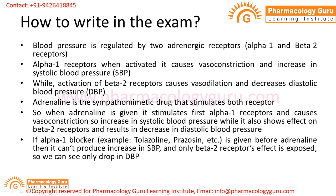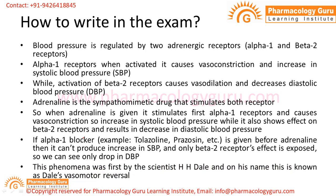If alpha 1 blockers such as tolazoline or prazosin are given first, then when adrenaline is injected, the only observable effect is because of beta 2 receptor activation — so you will see only a decrease in diastolic blood pressure with no effect on systolic blood pressure. This phenomenon was first studied by scientist H.H. Dale, and on his name this is known as Dale's Vasomotor Reversal.